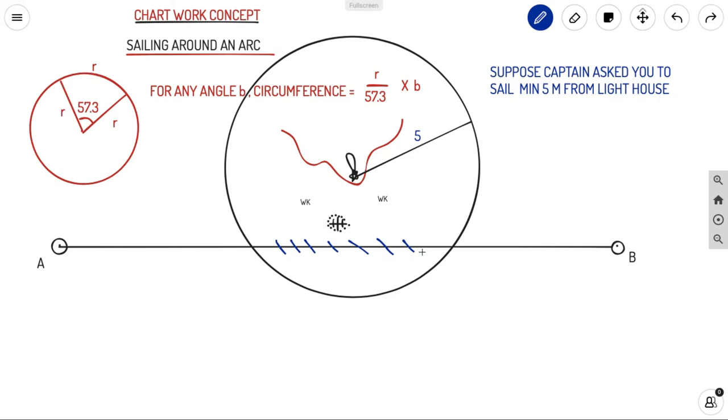So you cannot travel in this line. What you need to do is a rhumb line course from here till here, also a rhumb line course from here till B, and you have a sailing around an arc course through the circumference of this circle. So let us see how we will get the total distance from A to B including the circumference of this sailing around an arc.